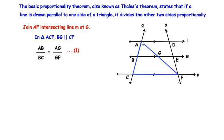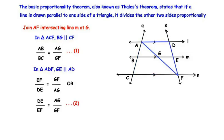Similarly, in triangle ADF, line GE is parallel to line AD. Again by BPT, line GE divides sides DF and AF proportionally, giving EF over DE equals GF over AG. We reciprocate this equation — flipping both fractions — to get DE over EF equals AG over GF. We did this because equation 1 also has AG over GF on the right-hand side. Let us call this equation 2.